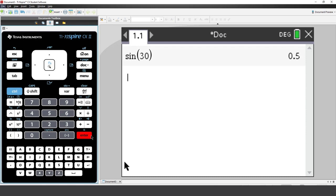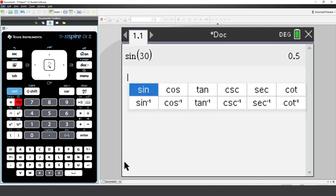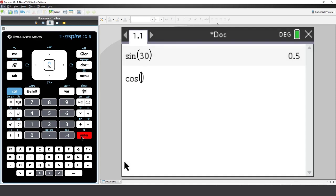Now let's calculate the cosine of 45 degrees. Press the trig key. You can use the arrow key to navigate across, or just press the trig key again. Then press enter to select cosine. Type in 45 degrees and press enter.